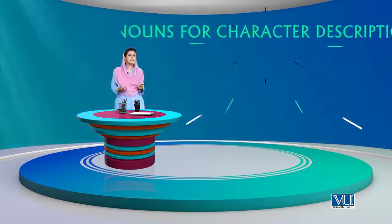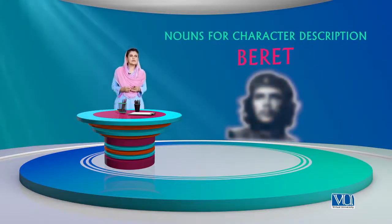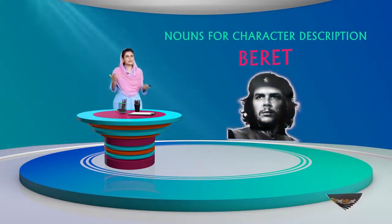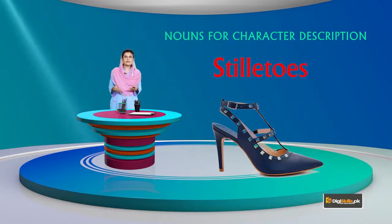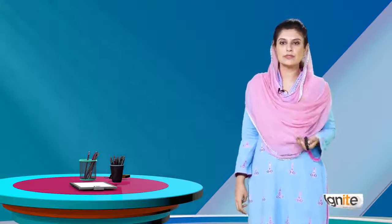For character description, you need to know nouns — for example, a barrette is a type of hat accessory, or stiletto is the name for heels. Instead of saying 'she wore heels,' if you use the exact name of that specific type of heel, that makes your writing more impressive.